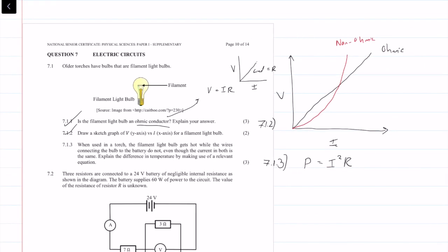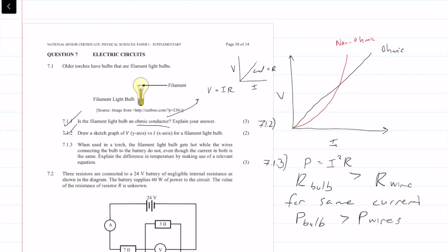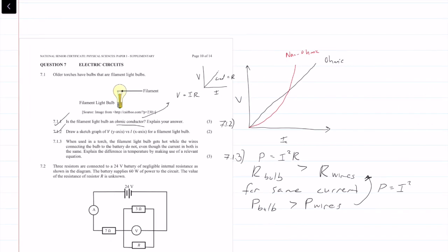The relevant equation is P equals I squared R. Both the bulb and the wires have resistance, but the resistance of the bulb is much greater than that of the wires. So for the same current, the power or heat loss of the bulb will be greater than the heat loss of the wires.